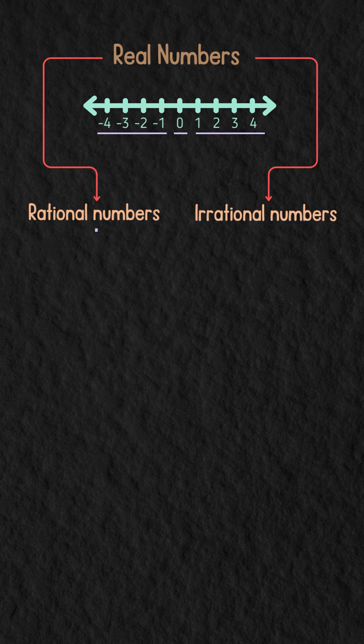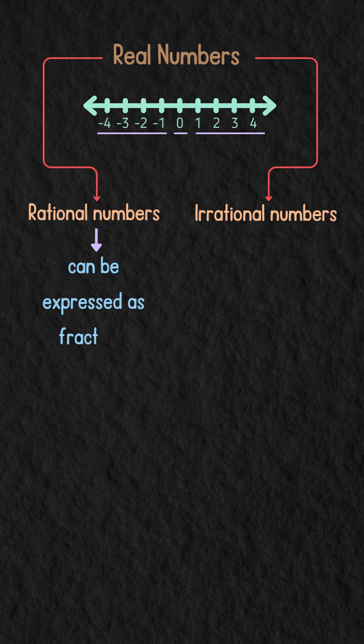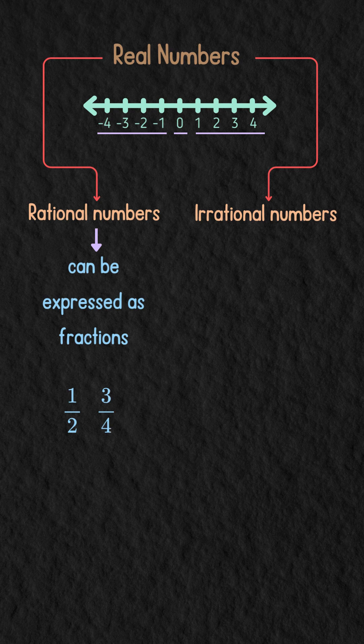Rational numbers are numbers that can be expressed as fractions, like 1 over 2 or 3 over 4.